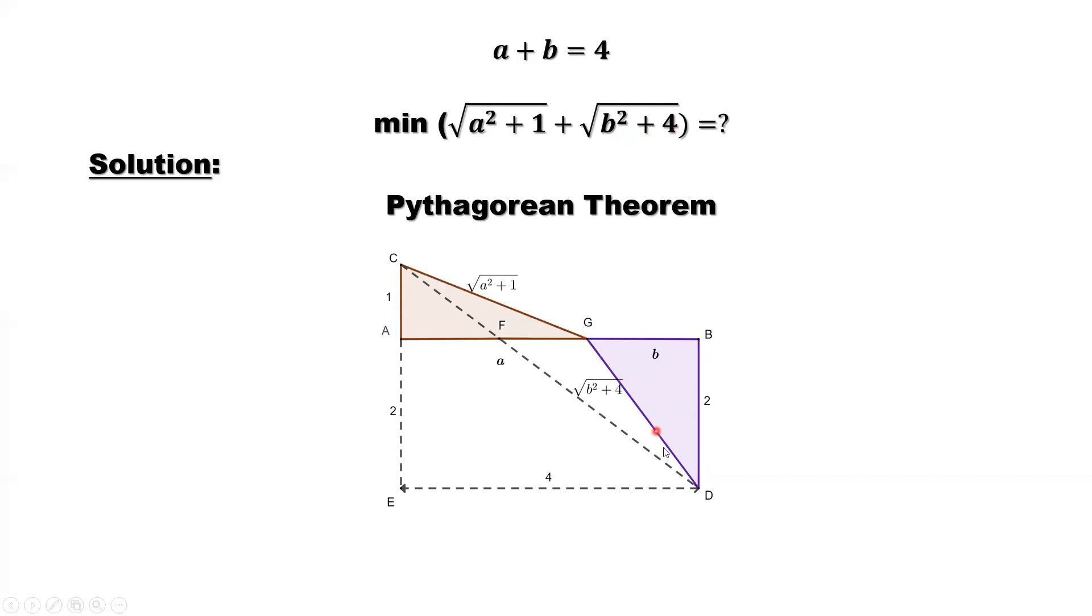what is the hypotenuse for this right triangle? b squared plus 2 squared, which is 4, then take the square root. So square root of b squared plus 4 is the hypotenuse.